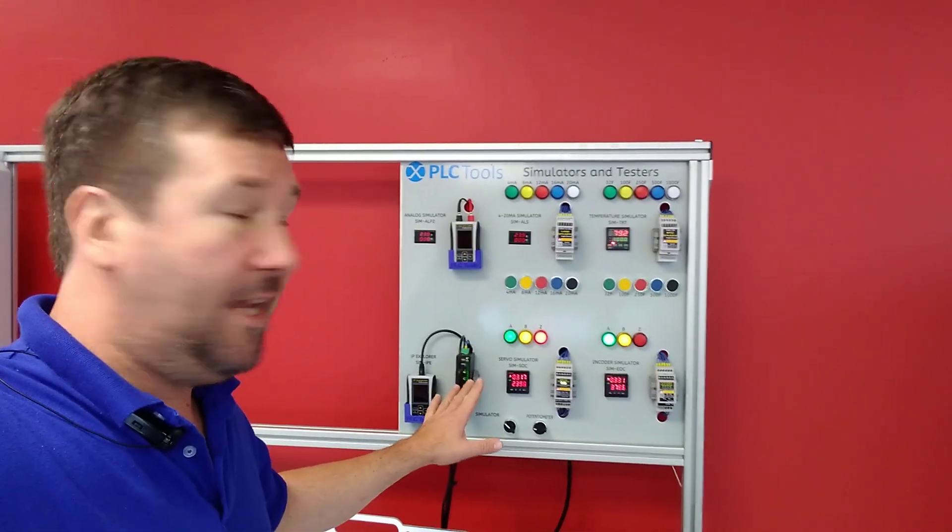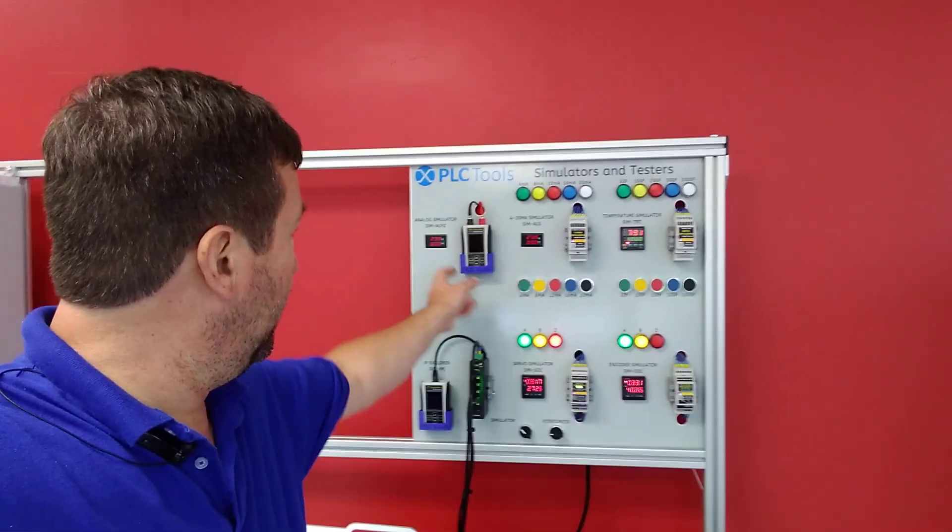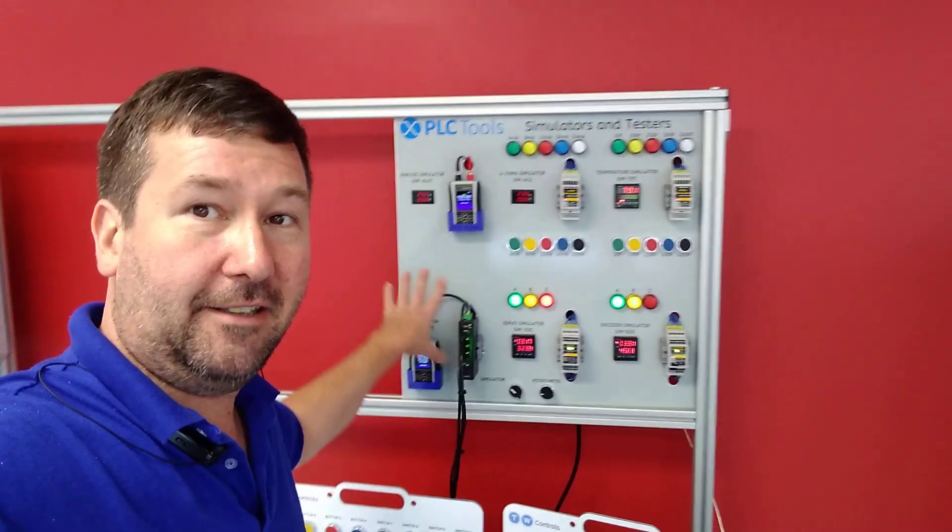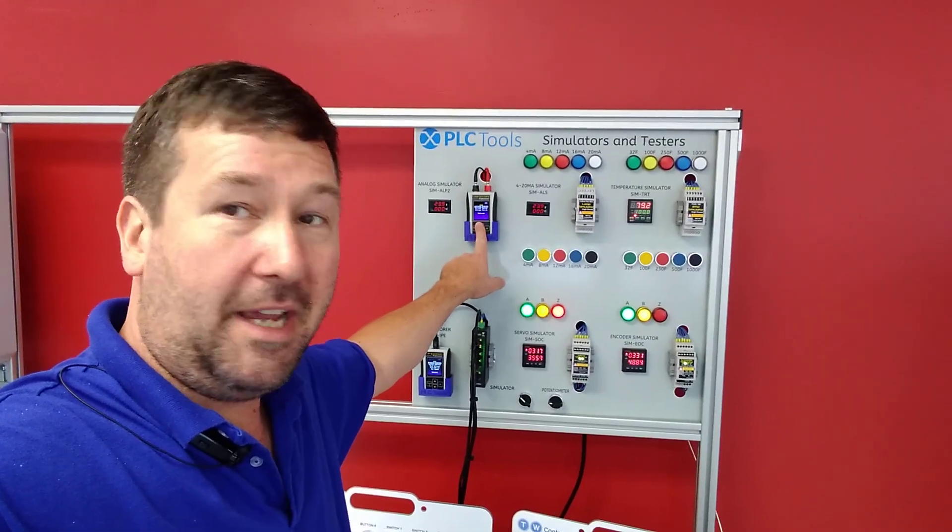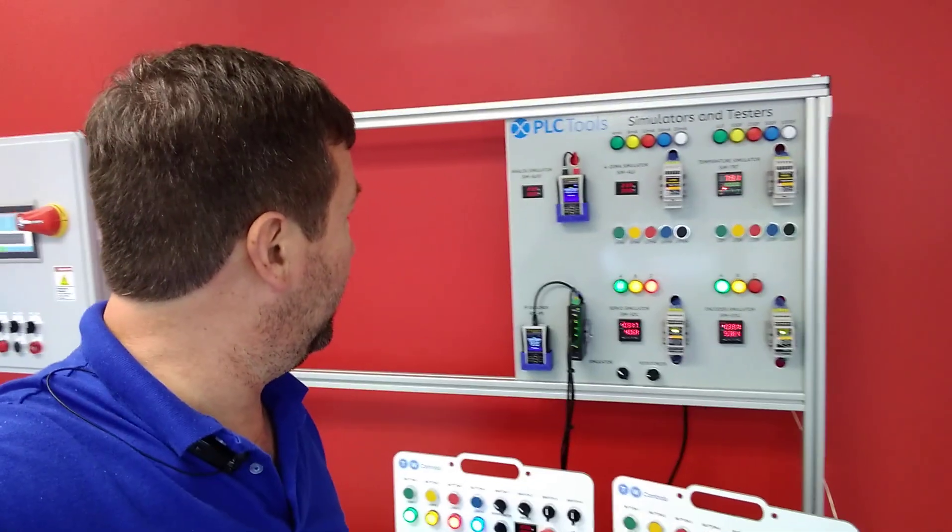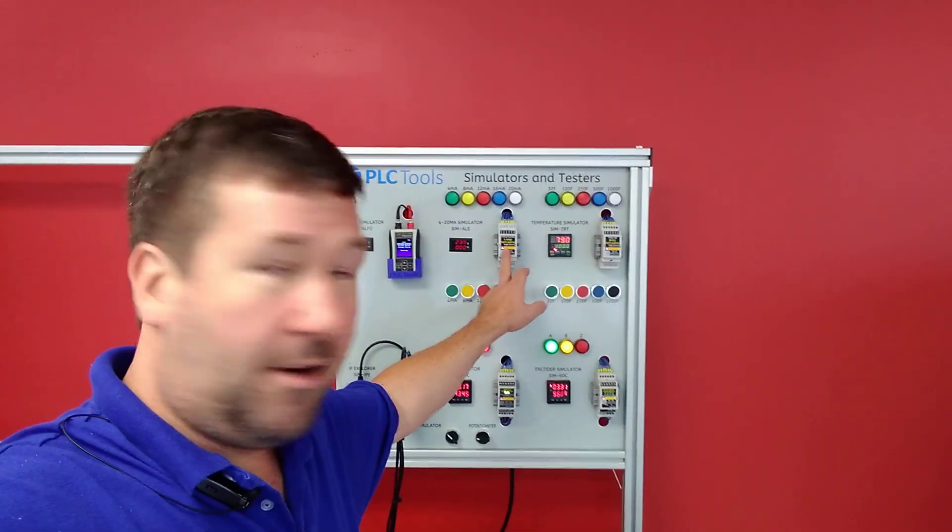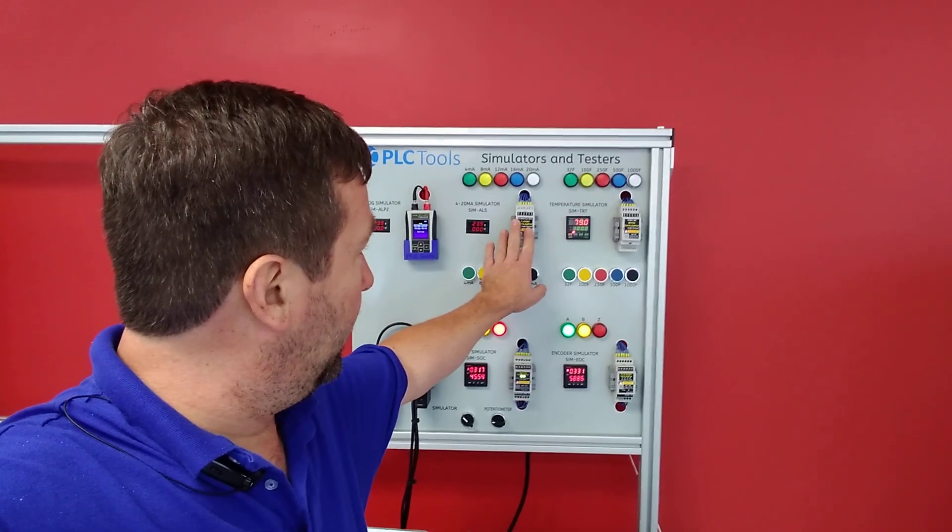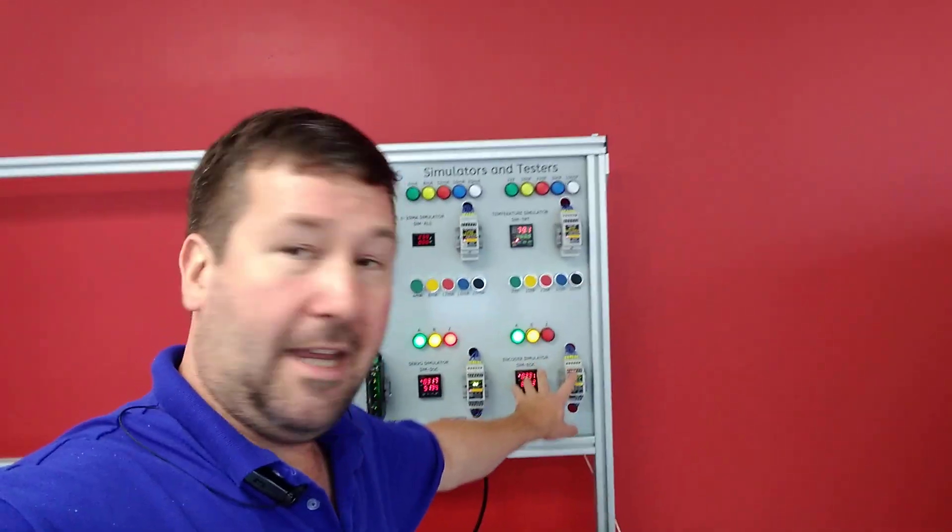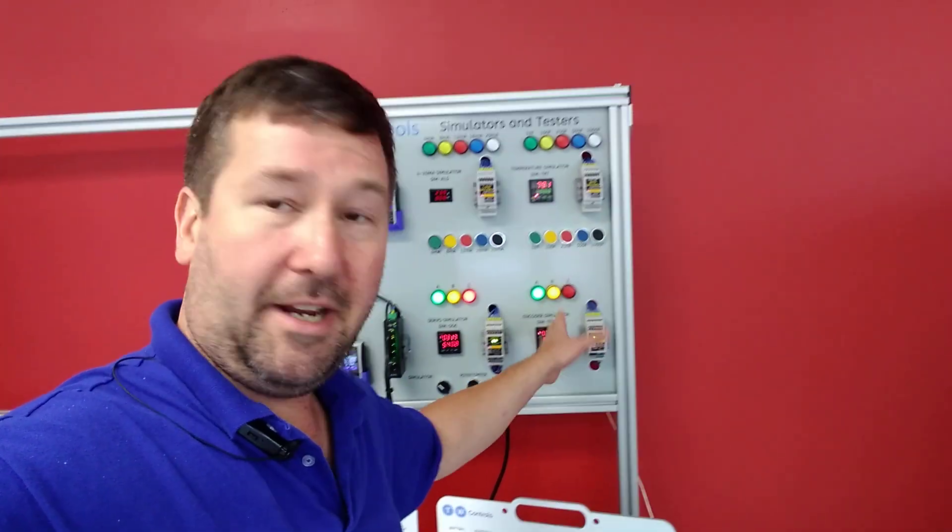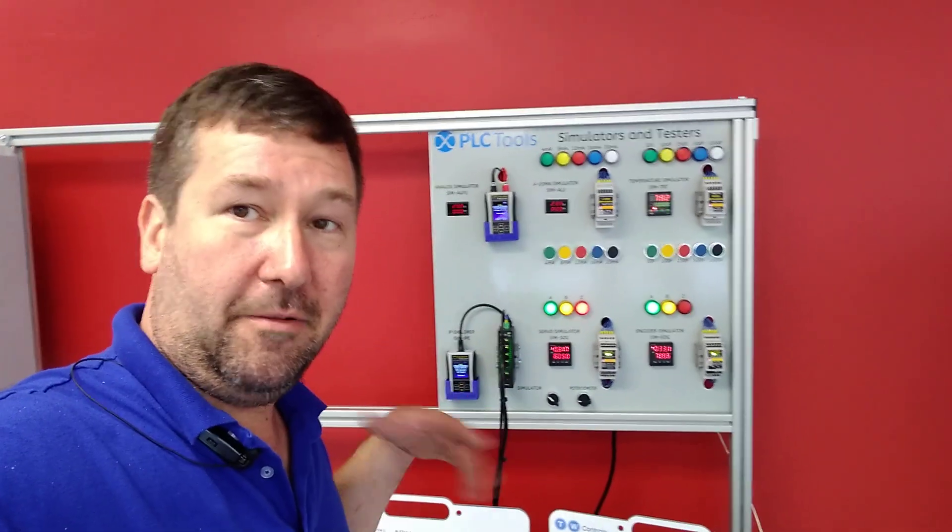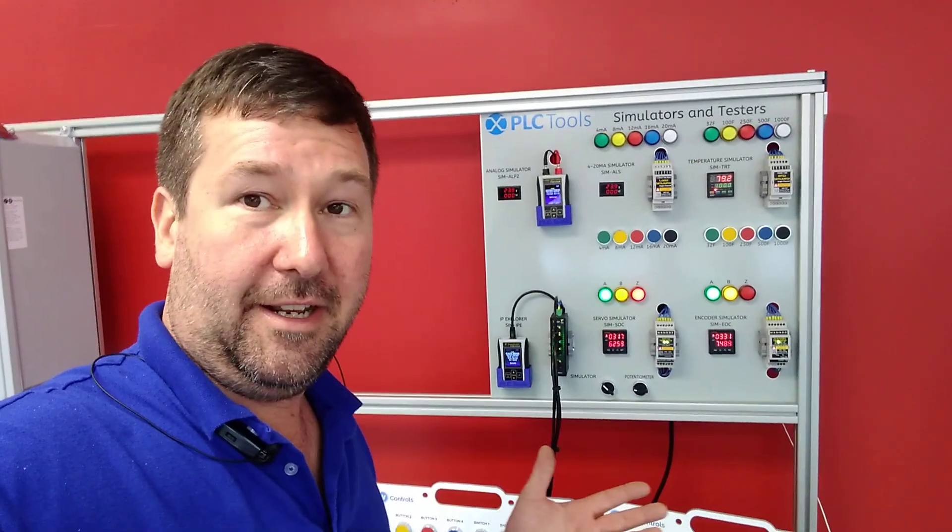Then on this side, we have a lot of our instrumentation simulators. I thought they'd be really flashy if I turn these on. There you go. Now they look all lit up. We have our SIM-ALP-2, that's our analog simulator. Does 4 to 20 milliamp and 0 to 10 volt. We also have our SIM-ALS, which is one of our other analog simulators. We have our RTD simulator so we can talk about temperature control. We have our encoder simulator, turbo simulator, and finally our IP Explorer where we can read and write IP addresses to Ethernet-enabled devices.